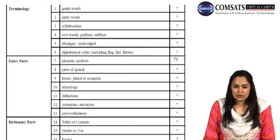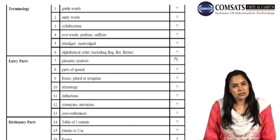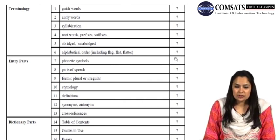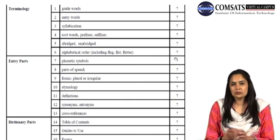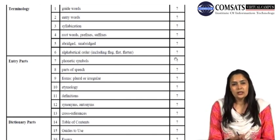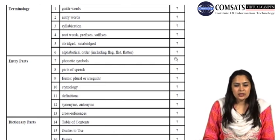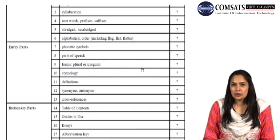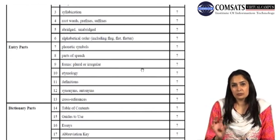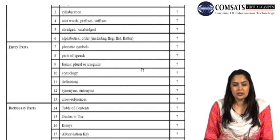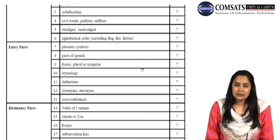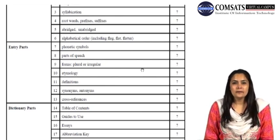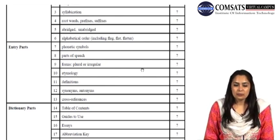Certain terminology related to a dictionary includes guide words, entry words, syllabification, root words, prefixes, and suffixes. Some dictionaries are abridged versions, some are unabridged. The entry parts are phonetic symbols — when you look at a word in a dictionary, there are symbols just ahead of that word called phonetic symbols which help you identify the pronunciation. Then there is part of speech, and we see its forms, whether it's used as plural or singular or irregular or another type of verb.